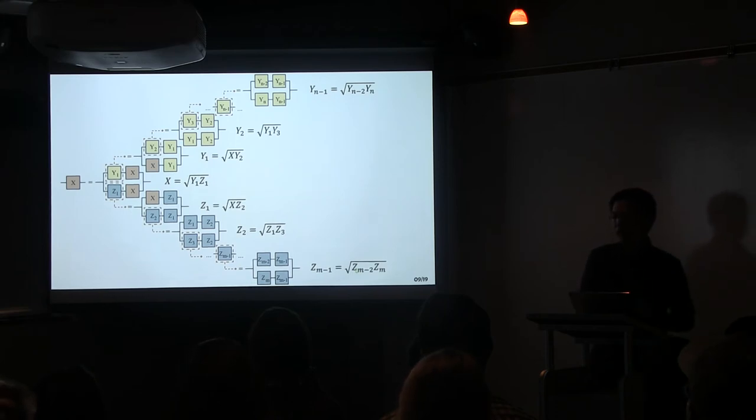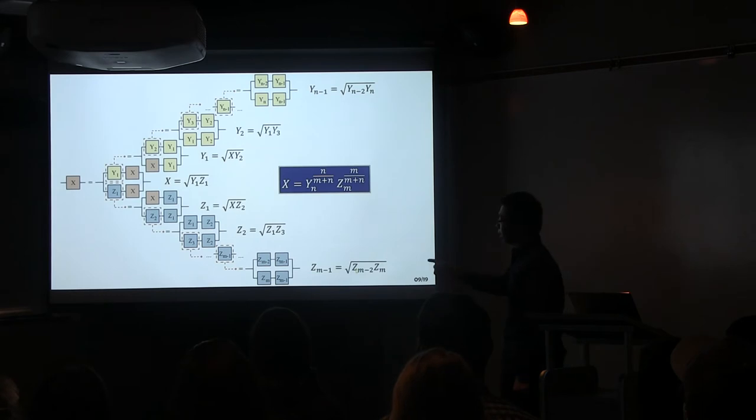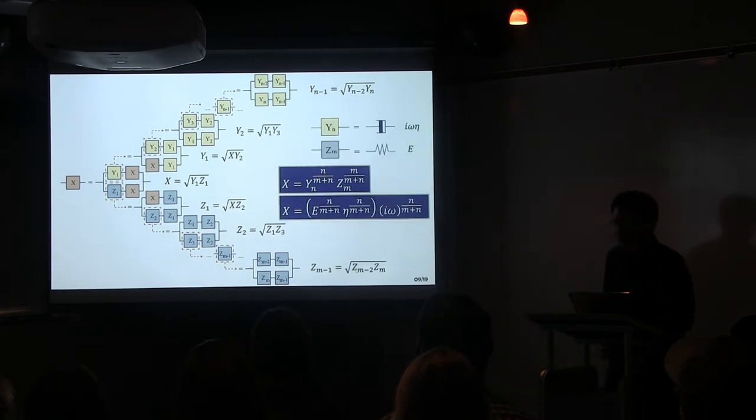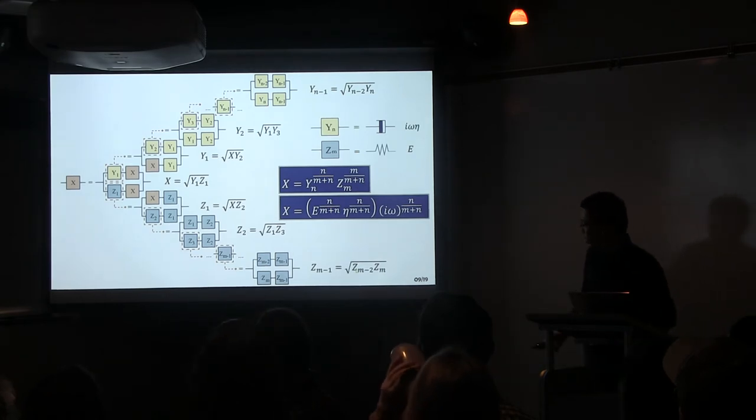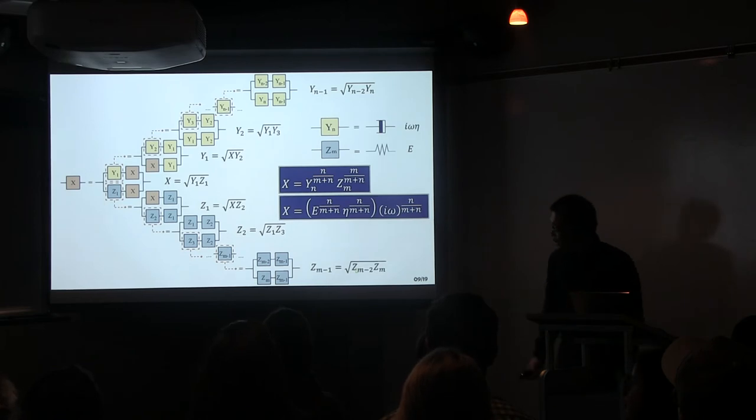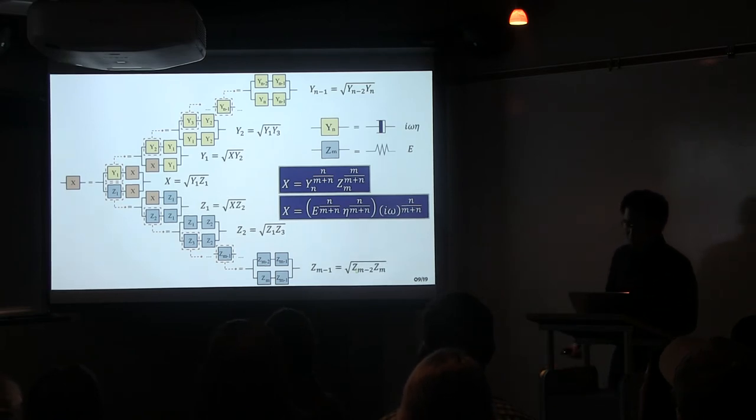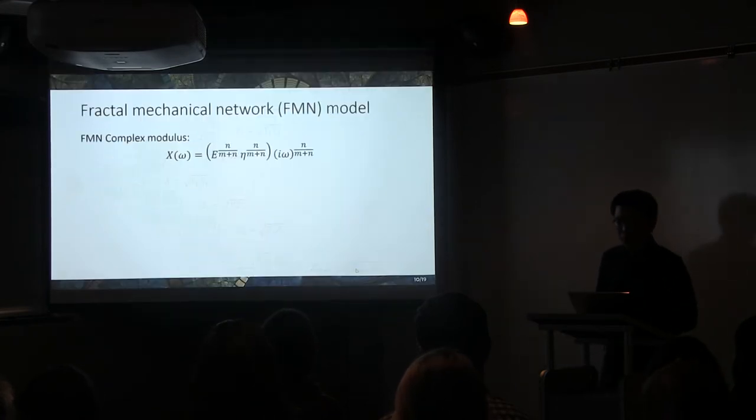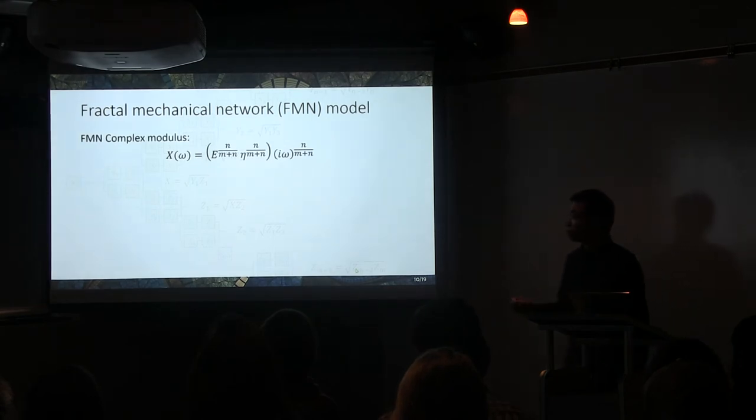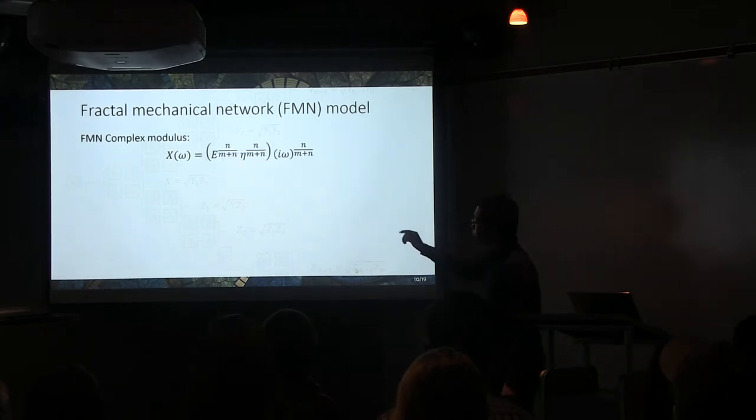If we only include the end member of Yn and Zn, the modulus of X can be represented in this way. So, we're talking about the scenario when Yn is the dashpot and Zn is the spring. Then, this is the final expression of the modulus of X. So, in a nutshell, this hierarchical structure, which we refer to as fractal mechanical network, can produce complex modulus written in this form.